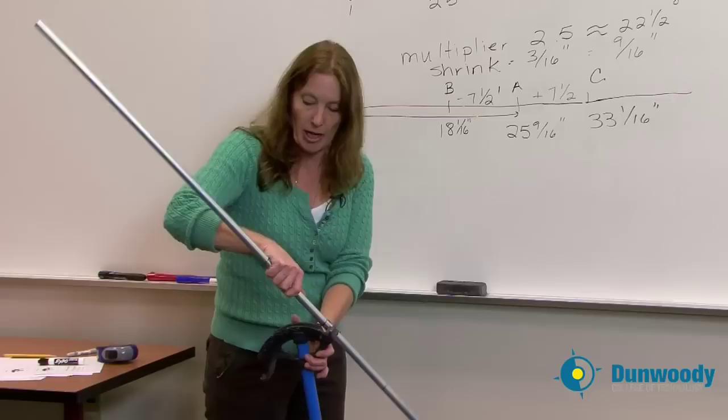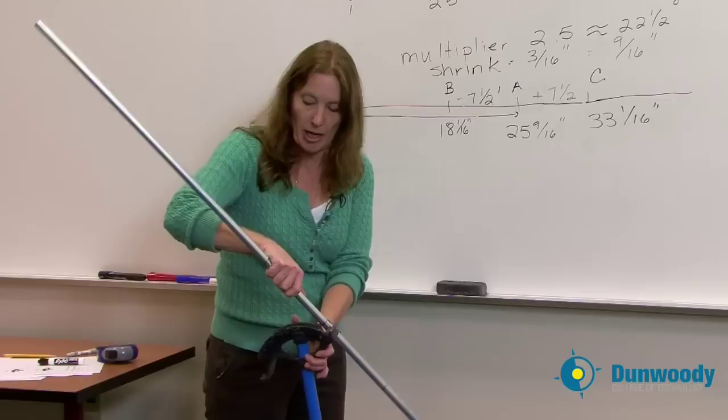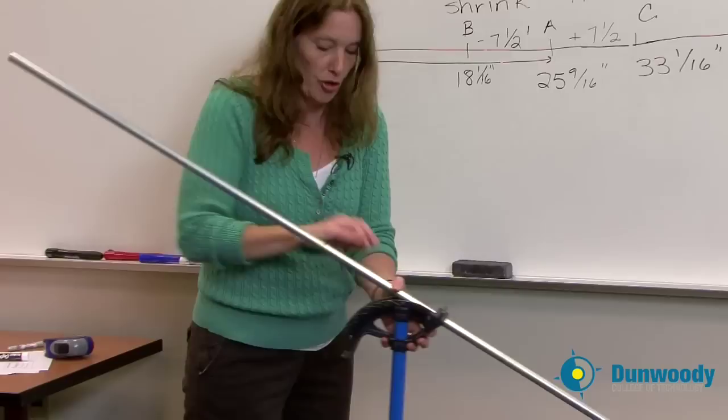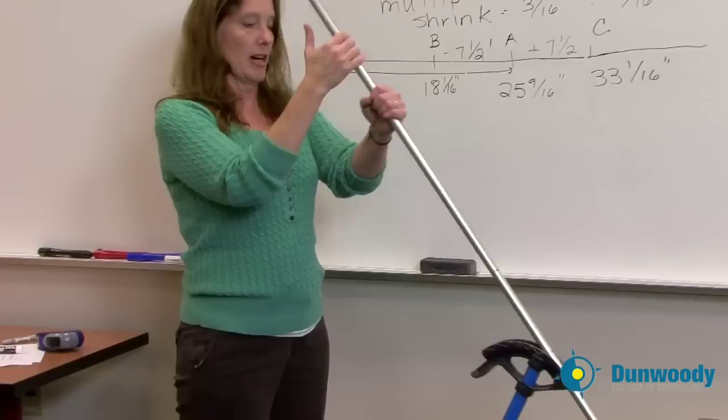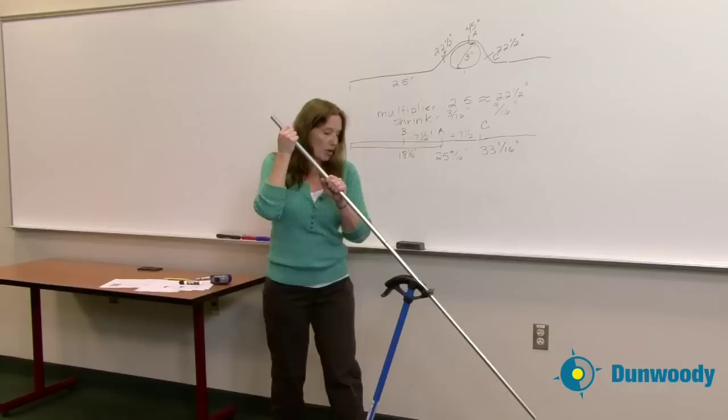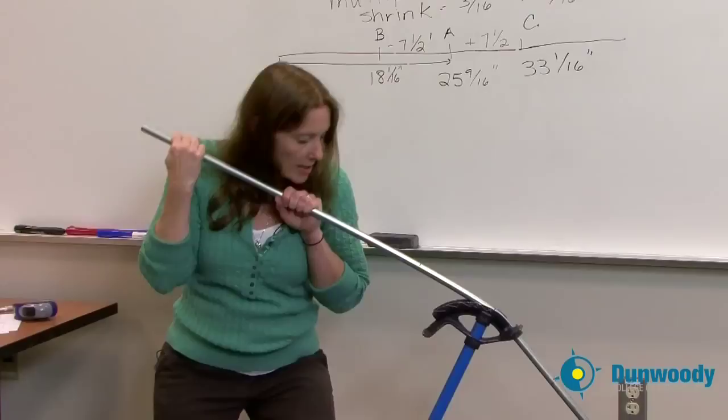I'm going to take and put the notch at that A mark. So I find my A mark which is my center mark and I'm going to match it up to the notch in my bender shoe. Once I have that marked, notice I am facing the direction that I measured from, and I'm going to put that bend in place. I'm going to take it down to a 45 degree bend.